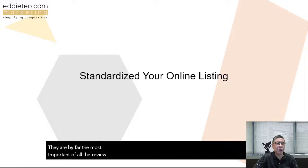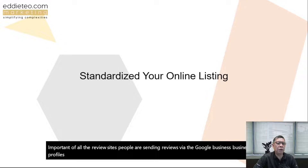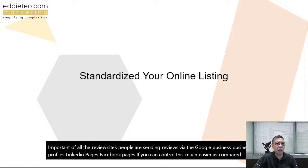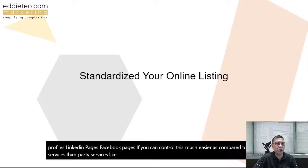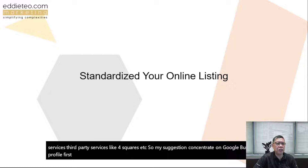Make sure your address, contact numbers, company name, and operating hours are consistent across all sites. I do find issues with services like Foursquare and Yelp — especially for non-US companies — as they can take months to respond to change requests. Fortunately, we can control our Google Business Profiles, which are by far the most important review platform. My suggestion: concentrate on Google Business Profile first, followed by Facebook Pages and LinkedIn Pages.